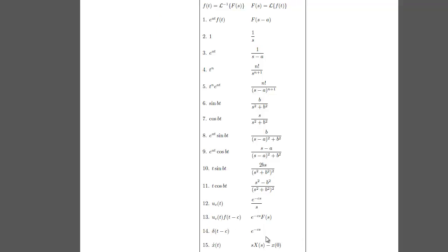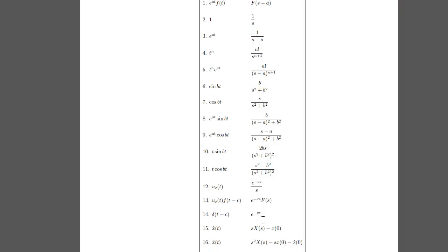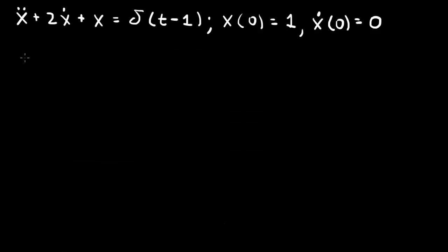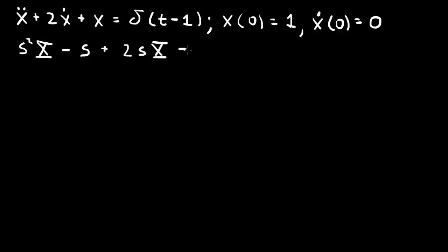The transform of delta of t minus c is equal to e to the minus cs. So transforming, we have s squared capital X, and then for the second derivative we have minus s times x of 0, which is 1, so minus s. The first derivative term contributes 0. Plus 2 times s times X, and the transform of x dot is s X minus x of 0, so we have minus 2 from the initial condition, plus X. That equals the transform of the Dirac delta function, which is e to the minus s, because c equals 1 here.